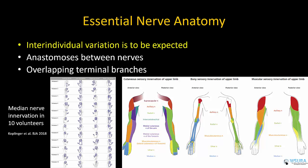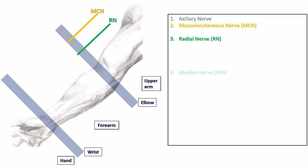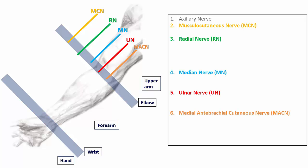Thus, understanding the course of the peripheral nerves in the upper limb is essential. The upper limb can be functionally divided into the upper arm, forearm, and hand, with the elbow and wrist as areas of transition and overlap. There are seven terminal nerves of the axillary brachial plexus that innervate the upper limb: the axillary nerve, the musculocutaneous nerve, the radial nerve, the median nerve, the ulnar nerve, and — one that is often overlooked — the medial antebrachial cutaneous nerve, usually located close to the ulnar and median nerves in the axillary neurovascular bundle.